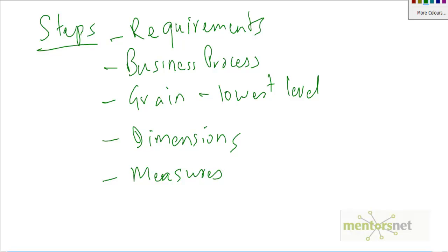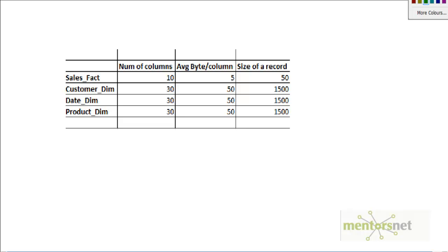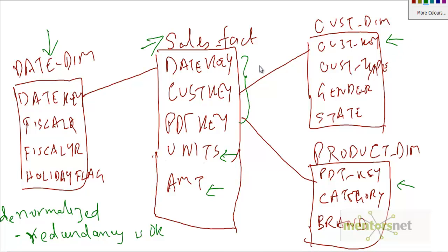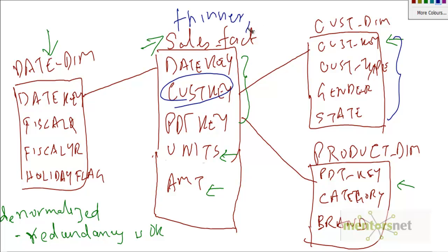Now let's talk about sizing the warehouse. Looking back at the sales fact with customer, product, and date dimensions — the dimensions typically have a lot of attributes, while they are translated into the fact table by their keys. The fact table is normally thinner but has more records. The dimensions are normally fatter — more columns — but have fewer records in comparison. This structure is done for a purpose: the main reason is query time. It's very fast when the model is structured this way.